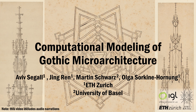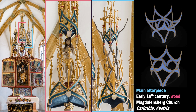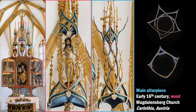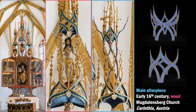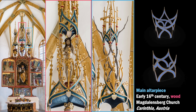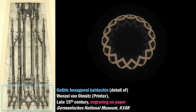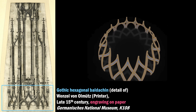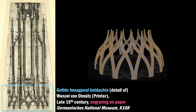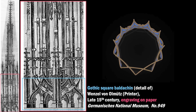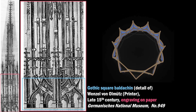Gothic microarchitecture is a design phenomenon widely observed in late medieval European art. It describes sculptural works that emulate the forms and structural composition of monumental Gothic architecture. Gothic microarchitecture was seamlessly integrated into a wide range of church artifacts and miniature structures, including reliquaries, baldachins, sacrament houses, and superstructures of altar pieces, realized in wood, metal, and stone.